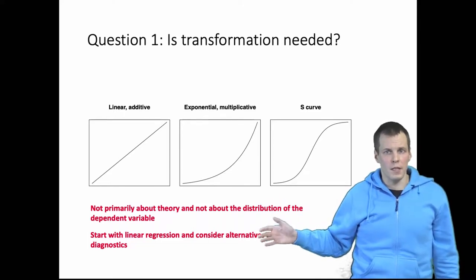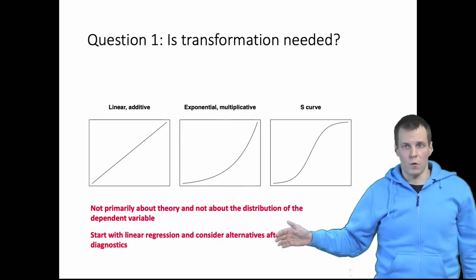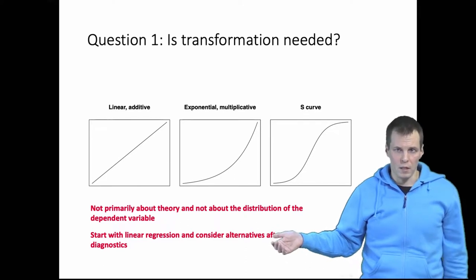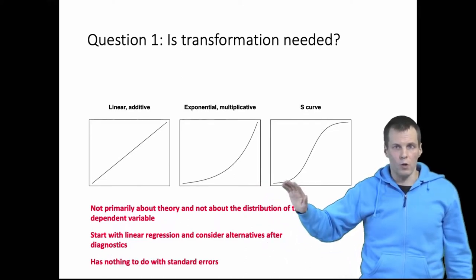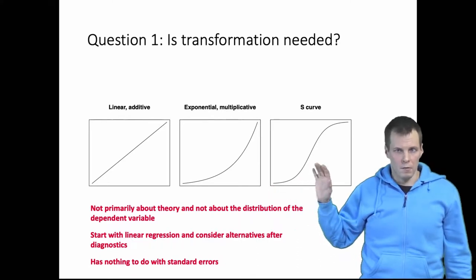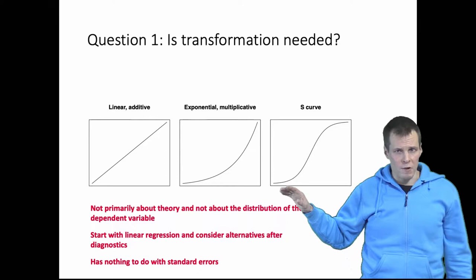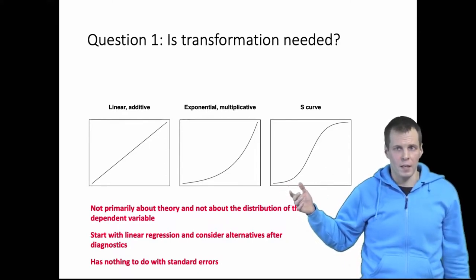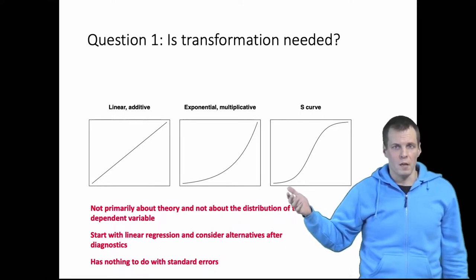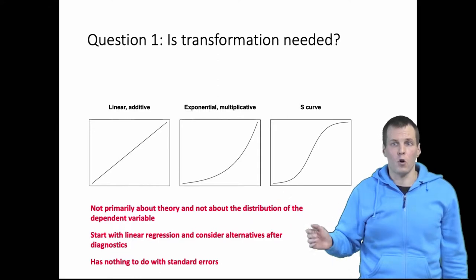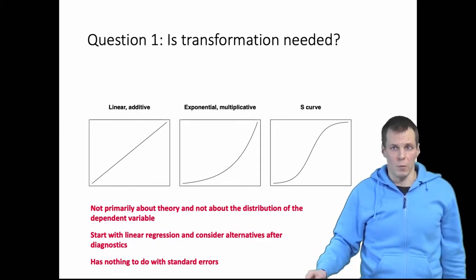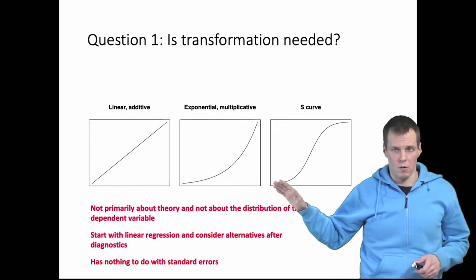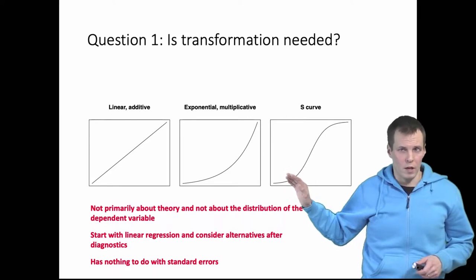Then the third consideration is that some textbooks and some articles say that you should transform the dependent variable to reduce heteroscedasticity so that your standard errors will be correct. And this decision has nothing to do with standard errors whatsoever. The decision of which transformation you apply is driven by theory. What do you think is the best explanation for the data? And the consideration for standard errors is secondary to that. And you can always use robust standard errors to deal with any heteroscedasticity issue anyway.